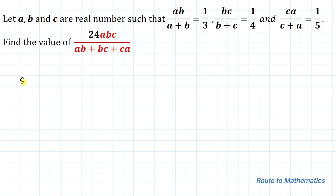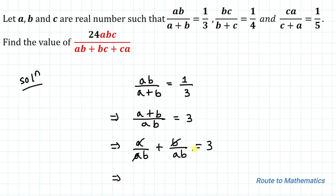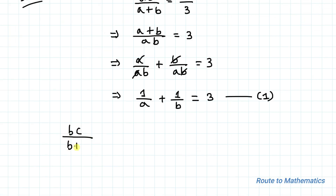Without any delay, let's start the solution. We have ab divided by a plus b equals 1/3. Taking the reciprocal, we can write a plus b divided by ab equals 3. This can be expanded as a divided by ab plus b divided by ab equals 3, which simplifies to 1/a plus 1/b equals 3. Let's take this as equation 1.